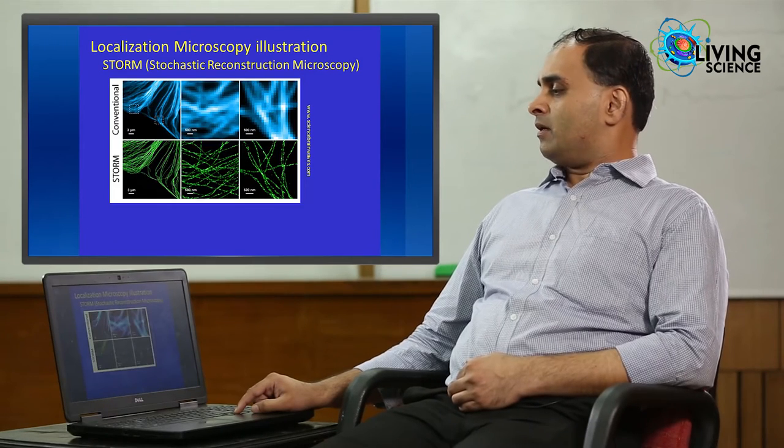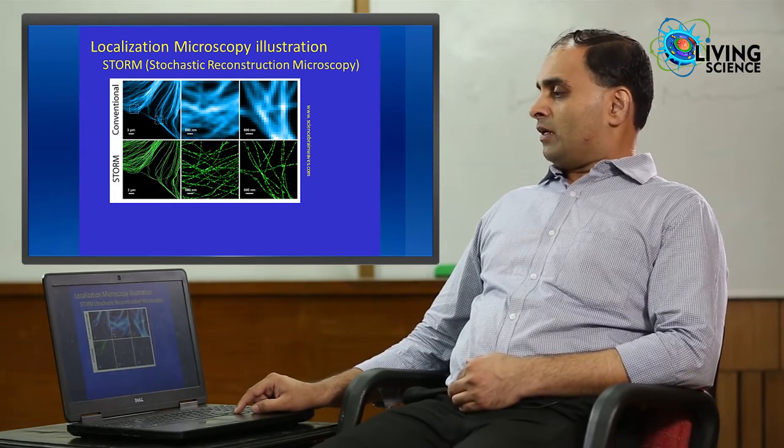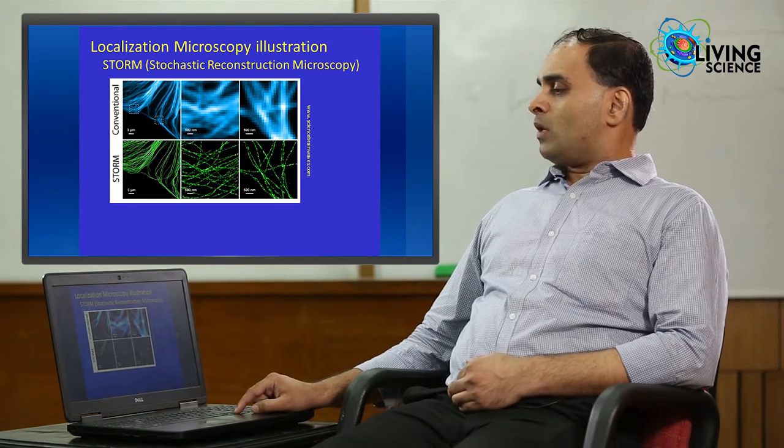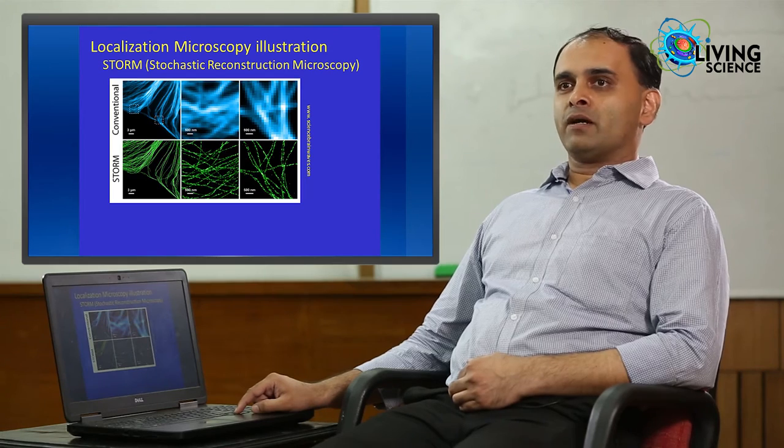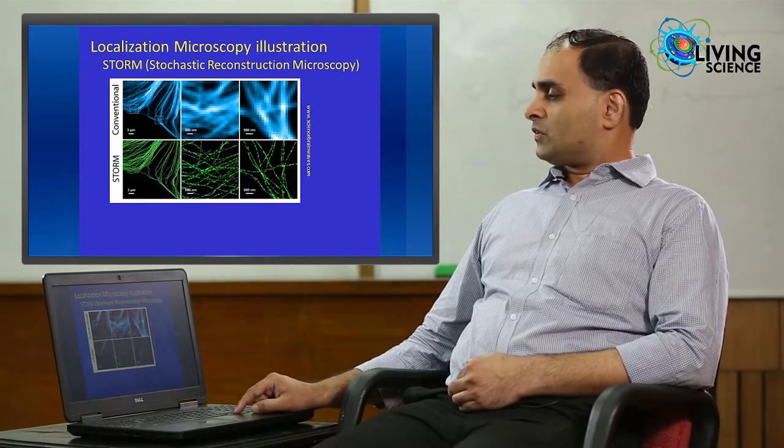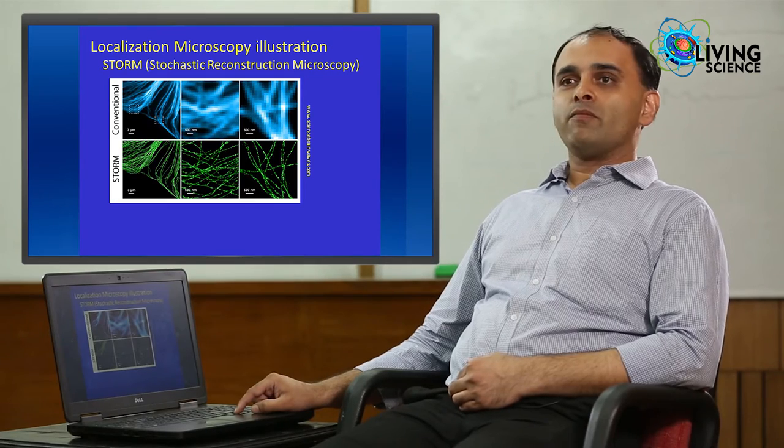As an example, you can see this image of the actin filaments. You can see that in a usual microscope with diffraction limited resolution, you cannot resolve them at all. Whereas, with the STORM microscope, you can see them very clearly.